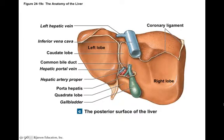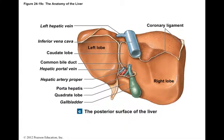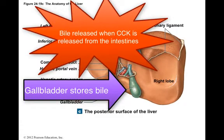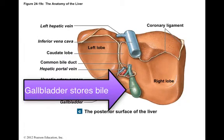The liver is another organ that secretes products into the duodenum through ducts. It carries out over 200 functions categorized into metabolic regulation, hematological regulation, and bile production. Bile is synthesized by the liver and excreted into the lumen of the duodenum. Bile contains water, ions, bilirubin (a green pigment), cholesterol, and bile salts. Bile salts help chemically digest lipids by breaking large lipid drops into tiny droplets that can then be broken down further to triglycerides. The gallbladder stores bile and releases it when the hormone CCK (cholecystokinin) is released from the intestines, causing the sphincter muscle of the gallbladder to open.